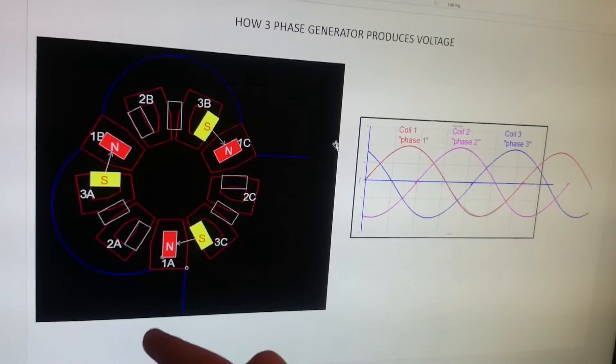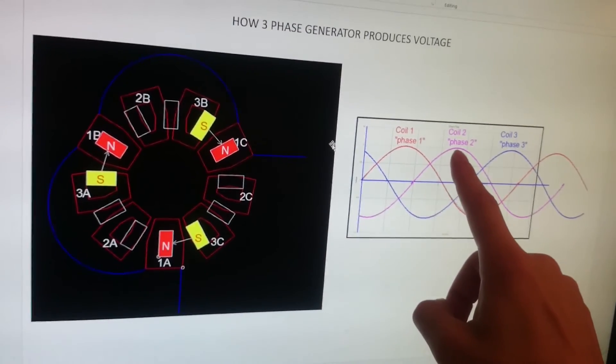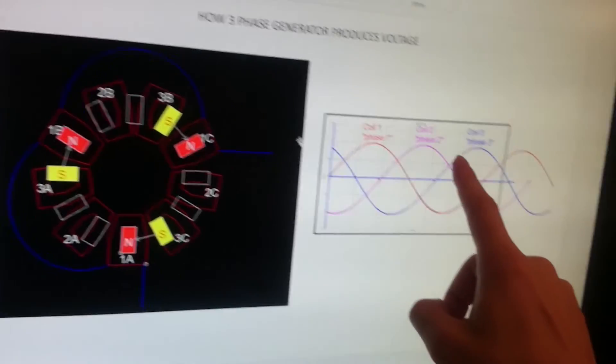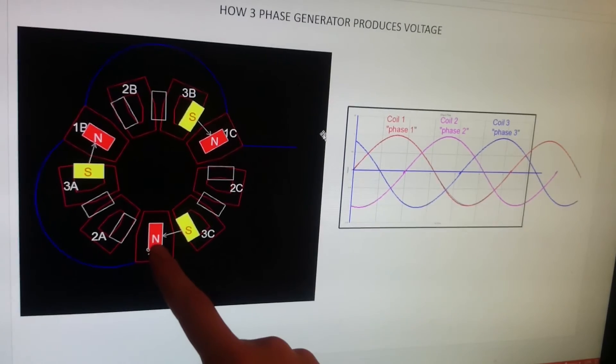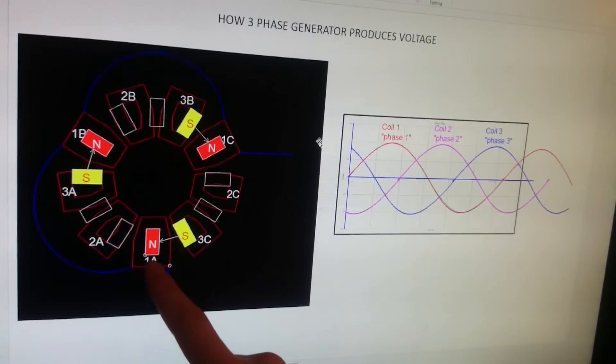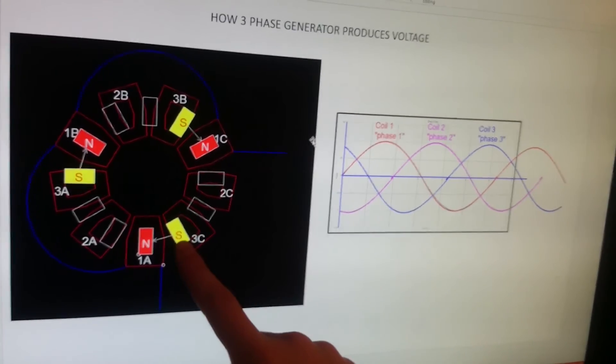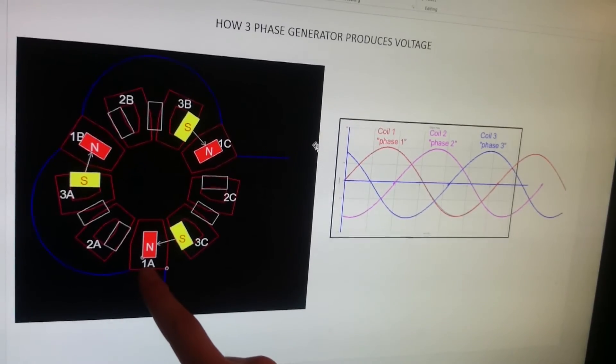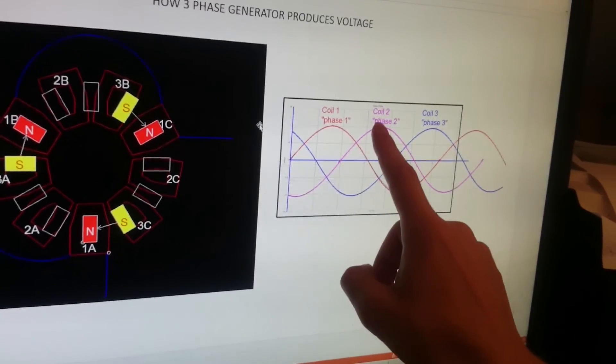Let's recap: we have three times three coils connected in series to get one phase, another three for the second phase, and another three for the third phase. When the north-facing pole crosses above coil 1—1A, 1B, 1C—we get plus 24 volts. When the south-facing pole crosses, we get minus 24 volts. The same stands for phase two and phase three.